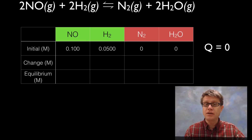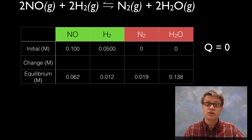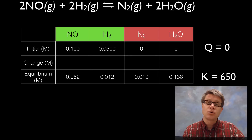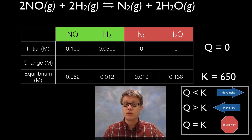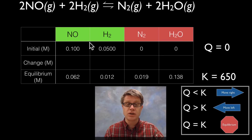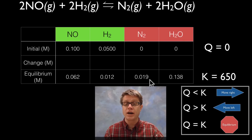To find K, if I'm given the concentrations at equilibrium I can calculate it — I'll show how to do that in the next video on equilibrium, but let's say K is 650. So which way is this reaction going to move? If I put K and Q on a number line, I can see I have to move to the right — I have to convert these reactants to products to approach equilibrium.